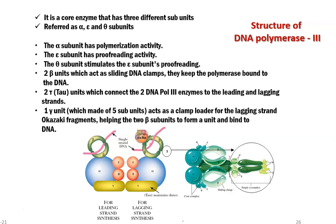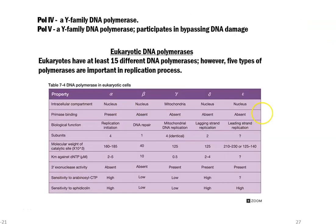The next prokaryotic polymerases include polymerase 4 and 5. These polymerases participate in bypassing or repairing DNA in some kind of DNA damage conditions. However, these polymerases are not playing a major role in DNA replication.